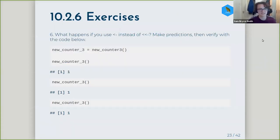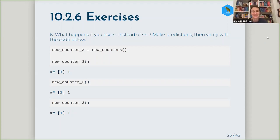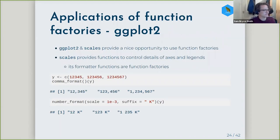Does anyone have any questions about these exercises? One example laid out in this chapter was with ggplot2, particularly showing how the scales package provides function factories. In this case, it's `comma_format`. So if you have your vector of values here, comma_format — or the manufactured comma_format — if you pass it your values they'll be formatted. This is a nice way to consistently format your axes and legend.